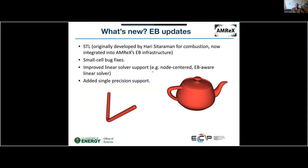There's also new stuff in embedded boundary (EB) land. Originally, EB support in AMReX was limited to specifying geometry in terms of analytic implicit functions — you could say give me a cylinder or a sphere, for example. But it's difficult to scale that up to really complex geometries. Recently, support has been added for general triangle meshes.